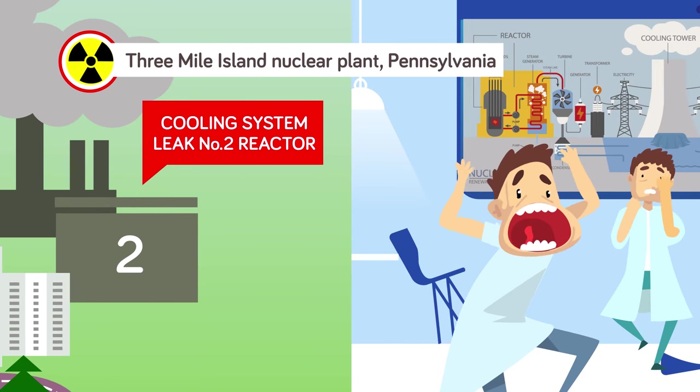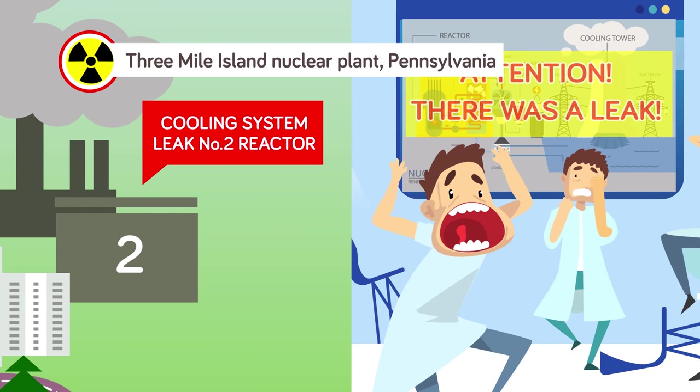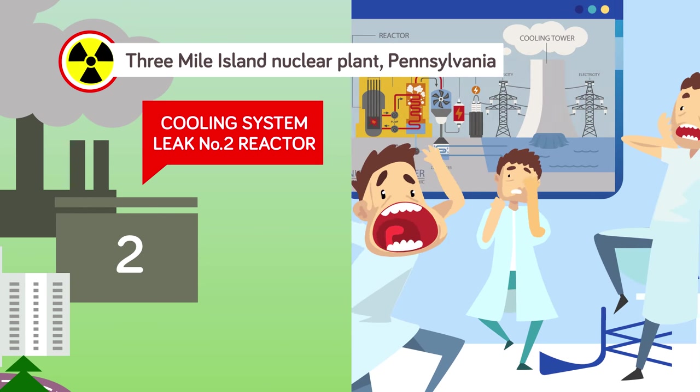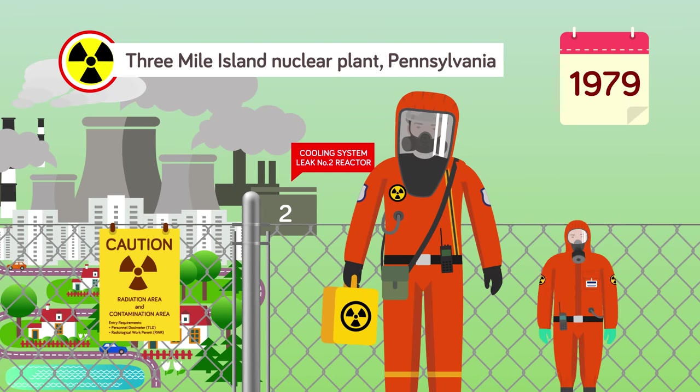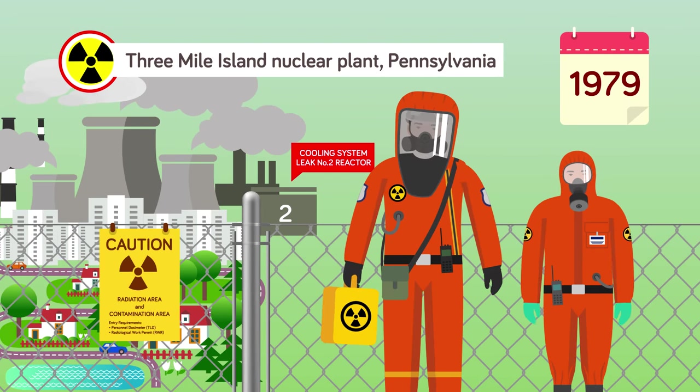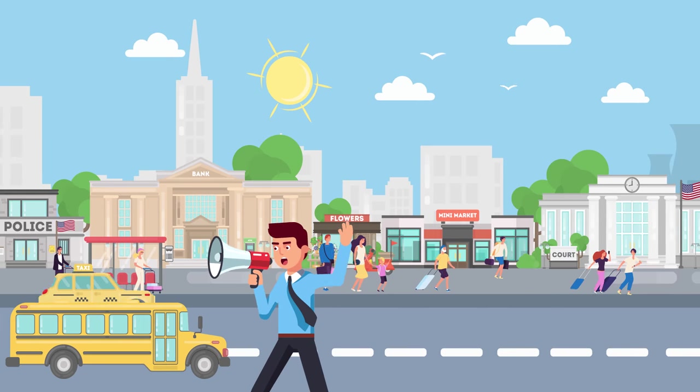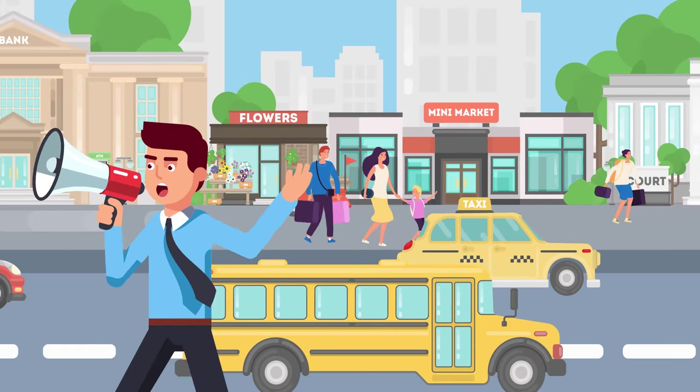While the reactors were stable, a failure in the mechanical systems regulating the safe venting of gases broke down and allowed a large amount of nuclear reactor coolant to escape. That led to a partial meltdown of reactor two, creating a major radiation leak near the city of Harrisburg. A voluntary evacuation of a twenty-mile radius around the plant followed.